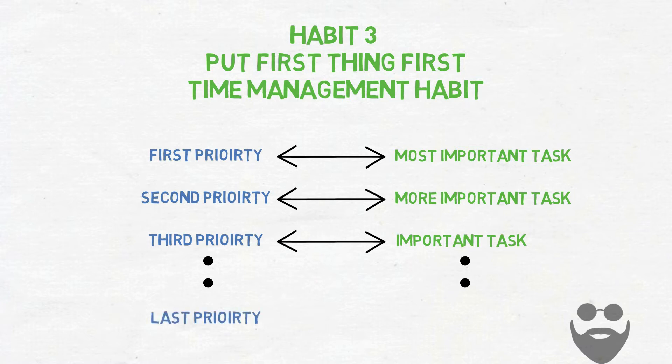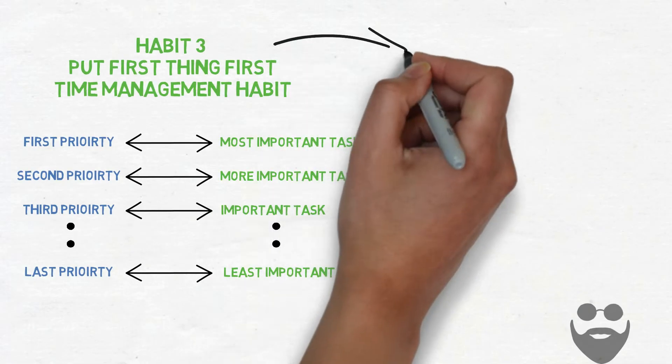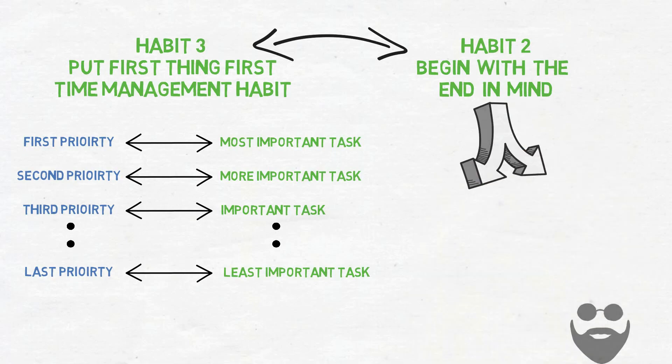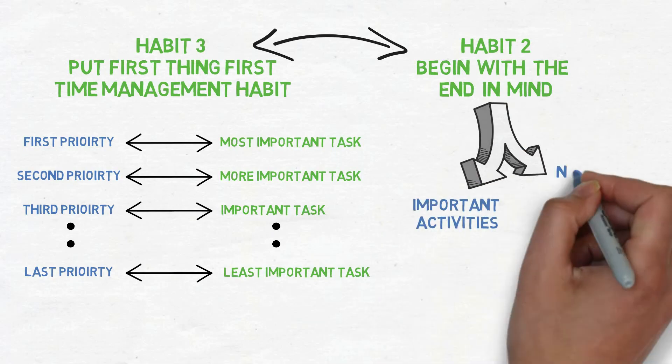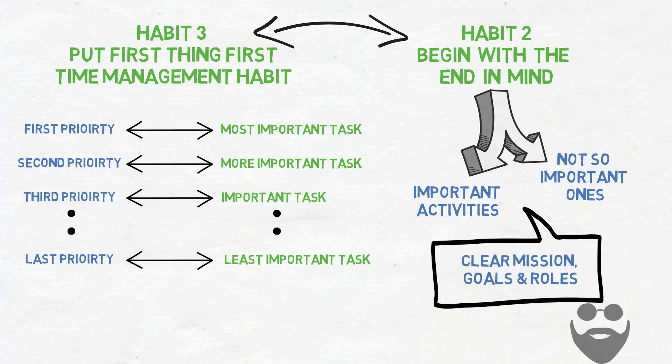But what's really special here is that habit two, begin with the end in mind, should have already come to our aid previously. It separates the important activities from the not so important ones with a clear mission, goals, and roles. So we can profoundly say that habit three is piggybacking off of habit two and making things happen.